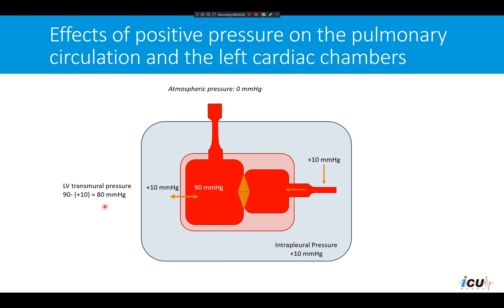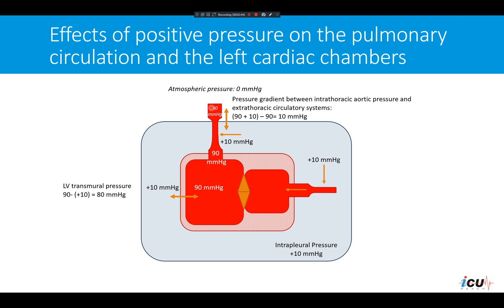The third effect of mechanical ventilation on the work of the heart is through the difference between intrathoracic and extrathoracic pressure within the circulatory system. We have a pressure inside the aorta of 90 mmHg; however, we have an additional 10 mmHg from outside, giving us a pressure of 100. The pressure outside is 90 mmHg, creating a gradient of 10 mmHg, which helps in decreasing the afterload on the heart.